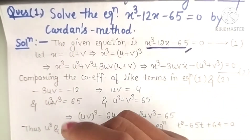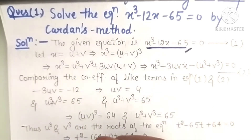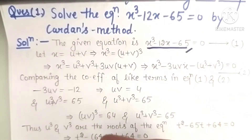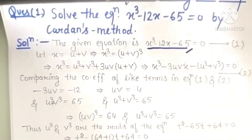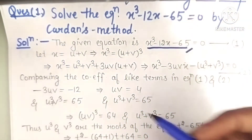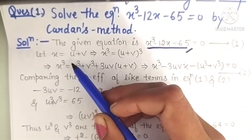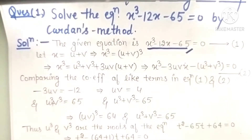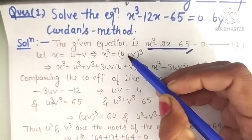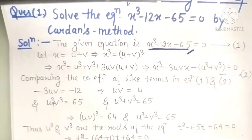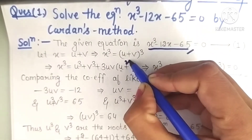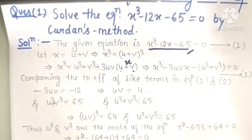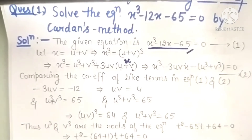In Cardan's method, you let x equal u plus v. Then you create a cubic equation and compare it with the given cubic equation by comparing coefficients. To make the cubic equation, we cube both sides. Using the (u+v)³ identity, and since u plus v equals x, we get: x³ = 3uvx + u³ + v³.